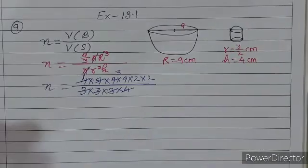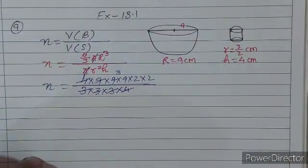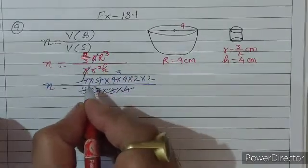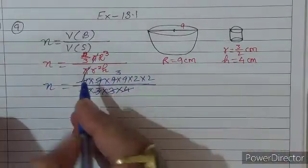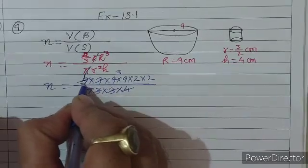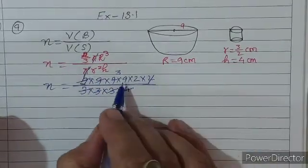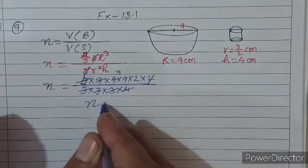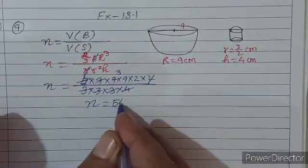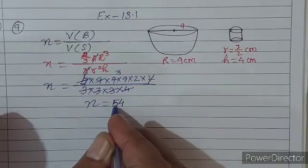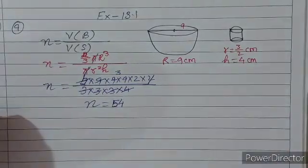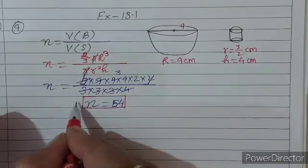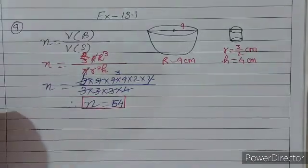एक बात ध्यान दें — यह hemisphere था इसलिए volume 4/3 की जगह 2/3 होगा। इसको change करने पर एक 2 और cancel हो जाएगा। 3 × 9 = 27, 27 × 2 = 54। Final answer: 54 bottles। इस liquid से 54 bottles भर जाएंगी। चलिए बढ़ते हैं question number 10 की तरफ।